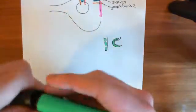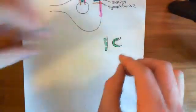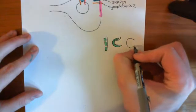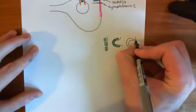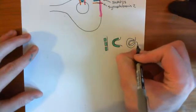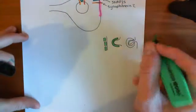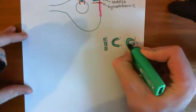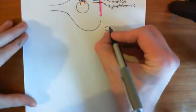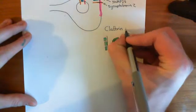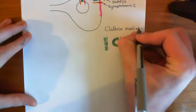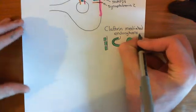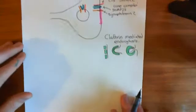The clathrin polymerises together and starts to form a sort of dome shape, still grabbing onto the membrane, pulling it into this dome shape too. Eventually the polymer continues growing, curving around, and the membrane curves around with it, and you gradually pinch off a vesicle. This is clathrin-mediated endocytosis — the building of a clathrin polymer that pinches off a vesicle from the membrane. This is how you re-endocytose the membrane of the synaptic vesicle.